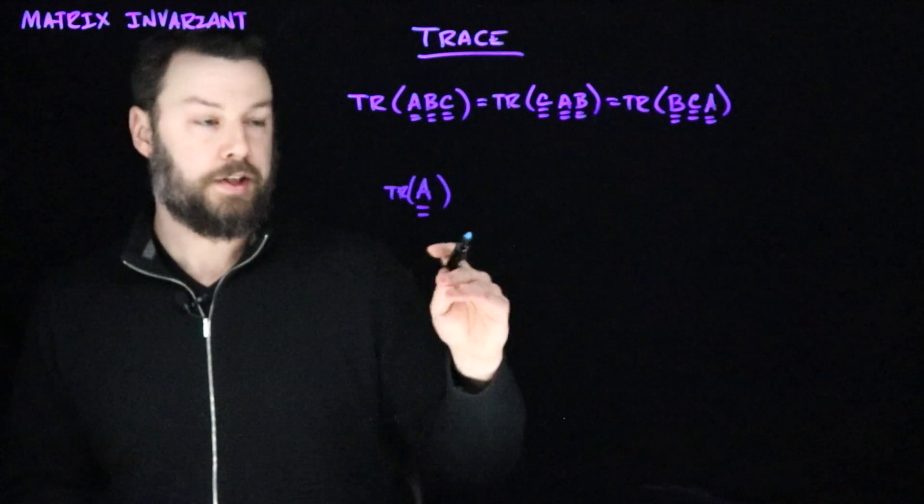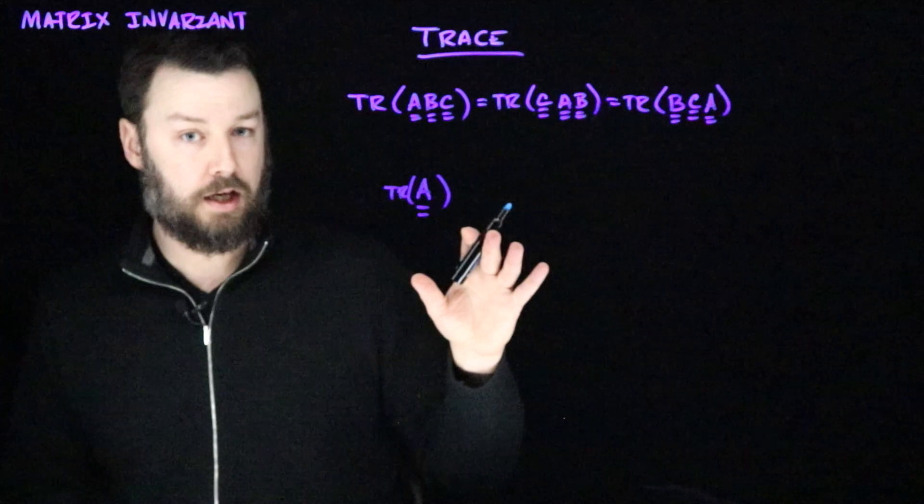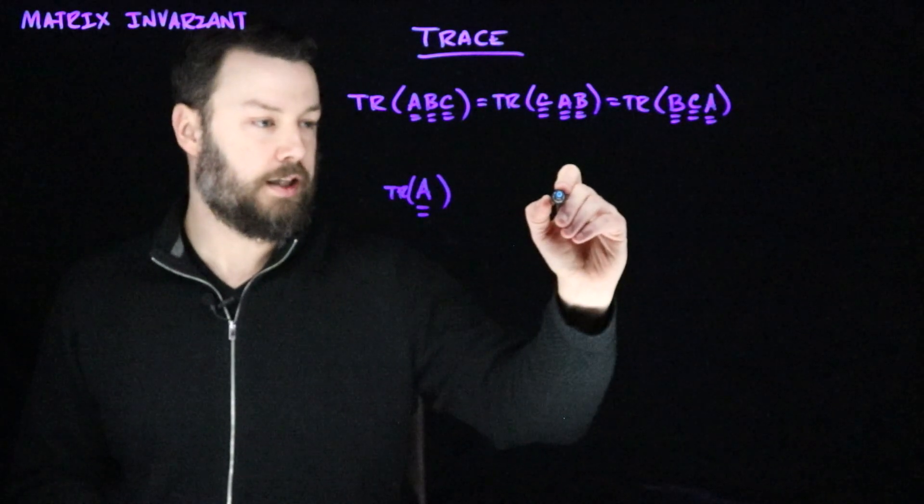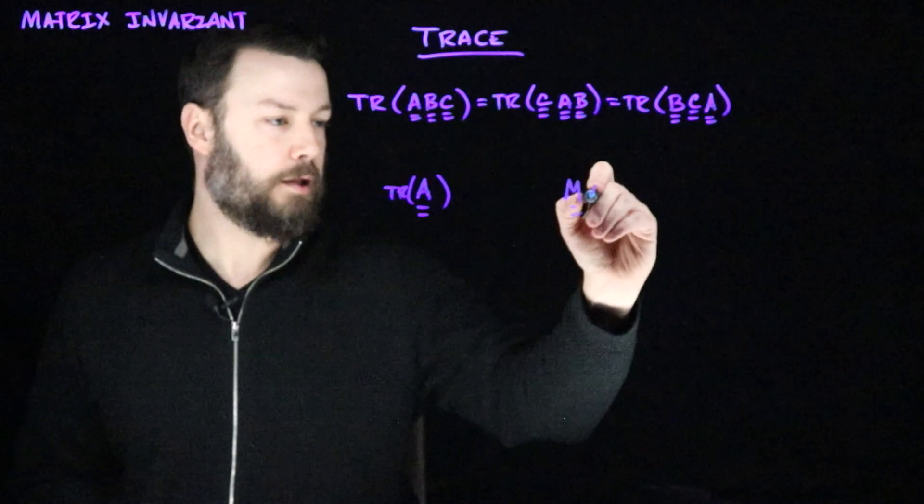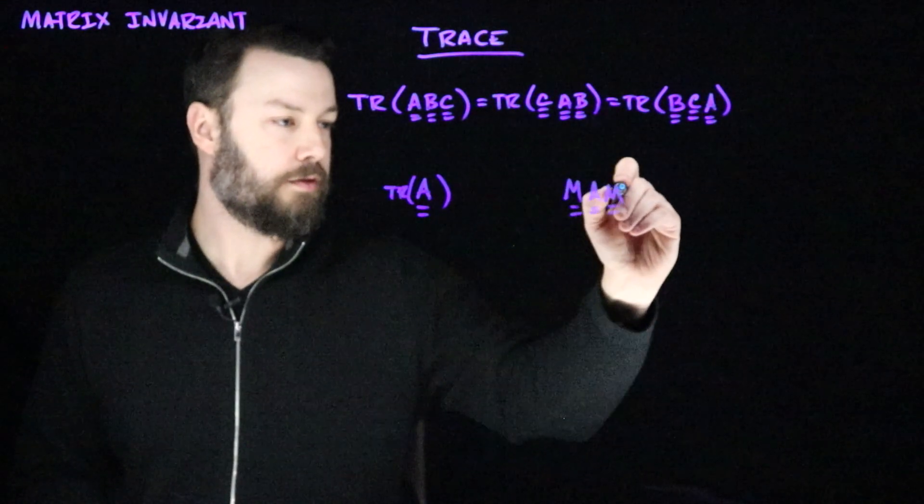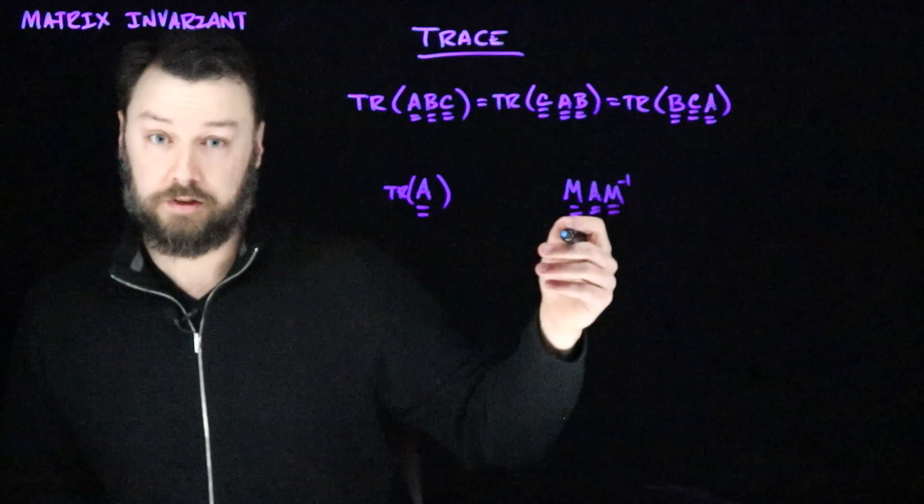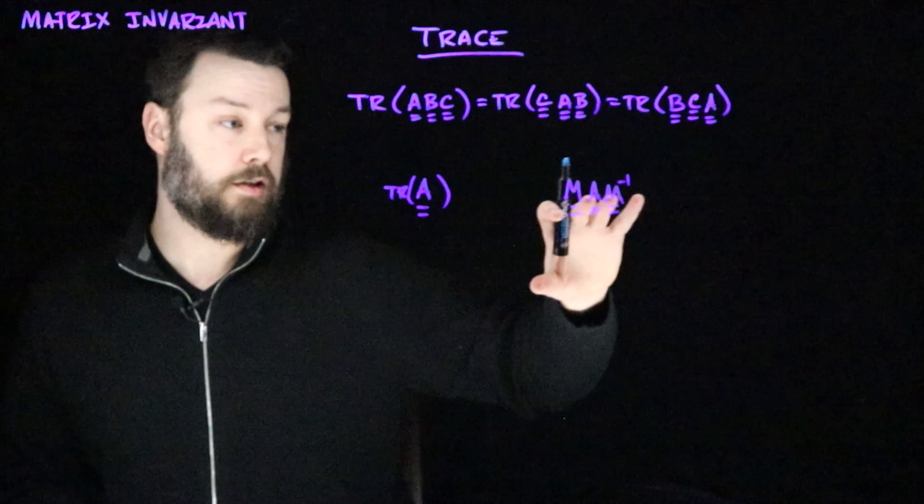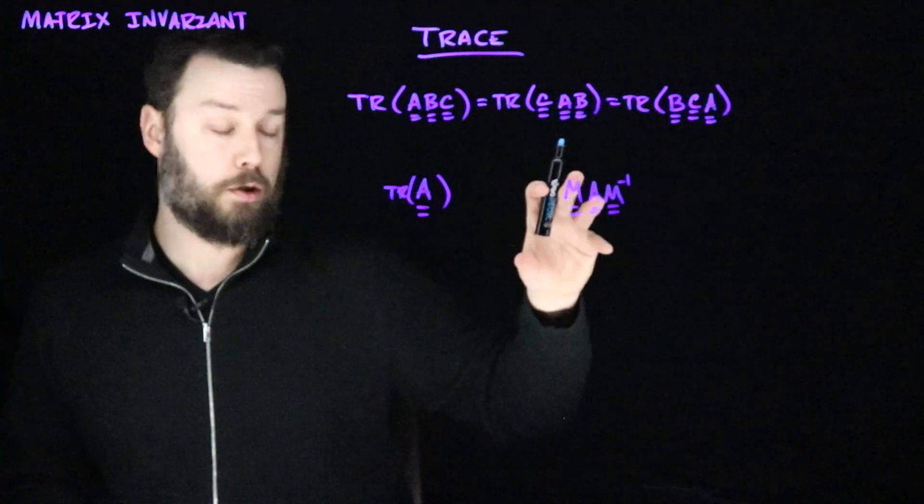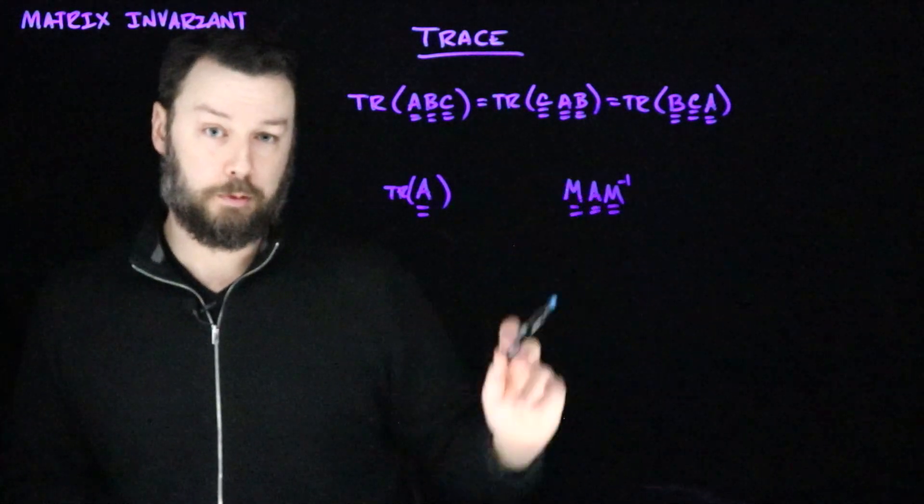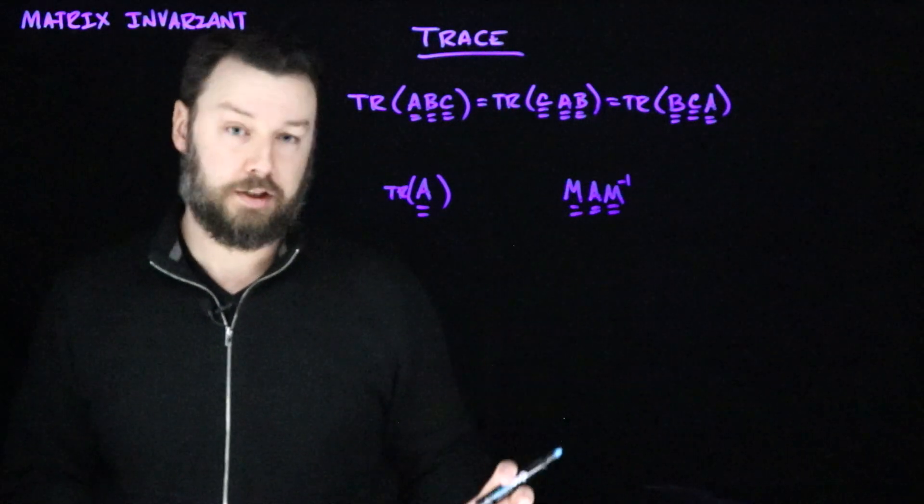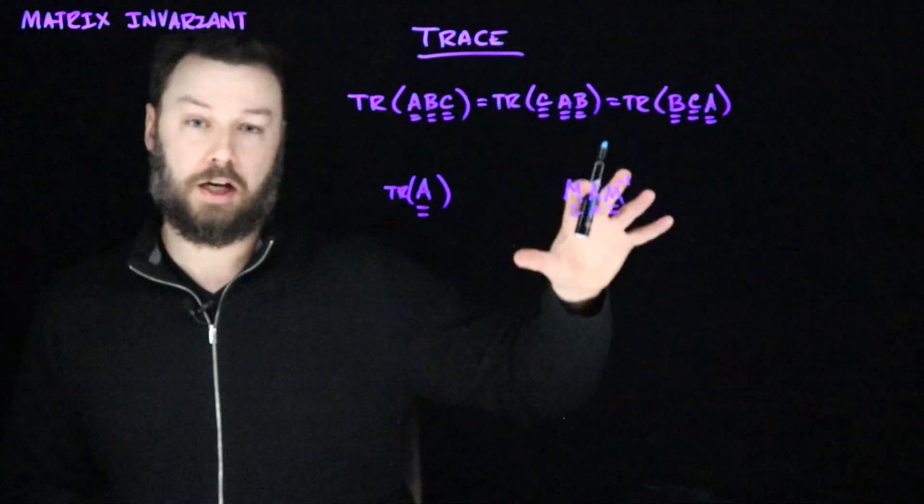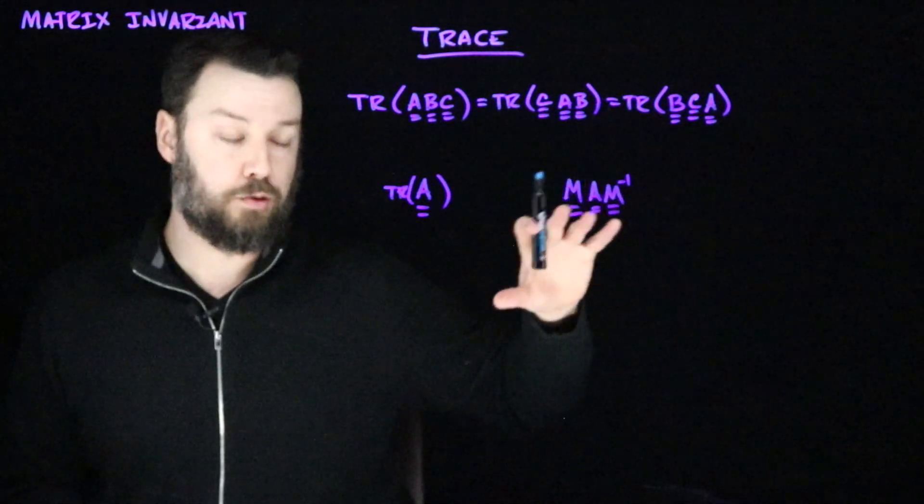And someone comes along and hits A on either side with an invertible matrix M and its inverse. And so, someone comes along and says M multiplied by A multiplied by M inverse. This is like a change of basis, right? So, somebody changes the coordinate system in which your linear transformation A is operating. So you have a square matrix A. You hit it with square invertible matrices M and M's inverse on either side.